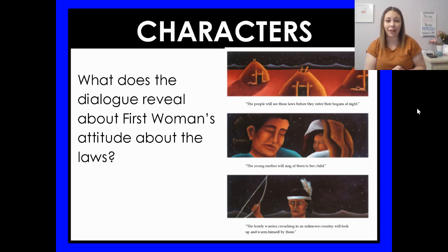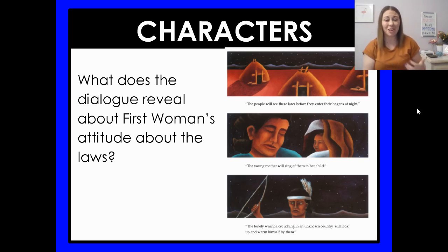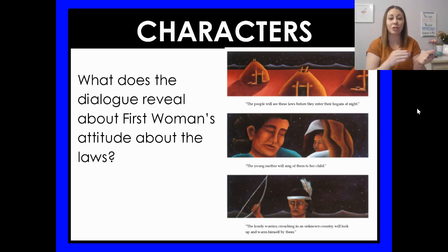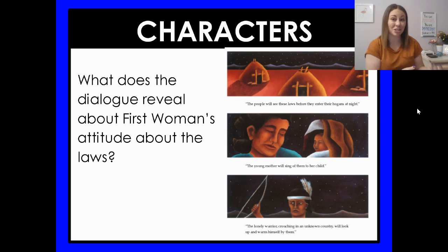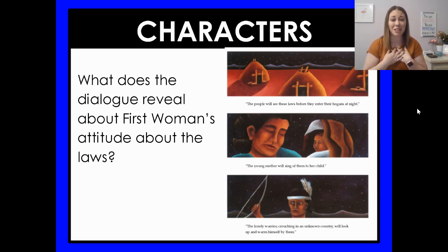What does the dialogue reveal about First Woman's attitude towards the law? 'The people will see these laws before they enter the hogans at night. The young mother will sing of them to her child. The lonely warrior, crouching in an unknown country, will look up and warm himself by them.' She's showing that everyone is going to see these laws — people before they enter their homes at night, the young mother singing them to her child, the warrior looking up and not feeling as lonely. And she said she could spend the rest of her life writing these laws. So First Woman's attitude is that the laws are super important and she wants them written well.